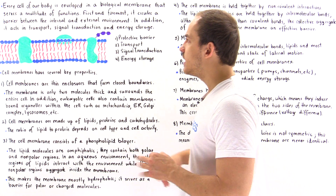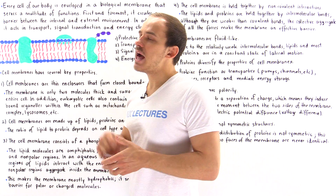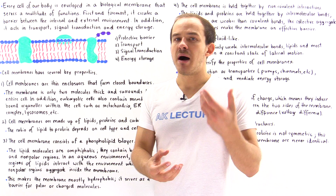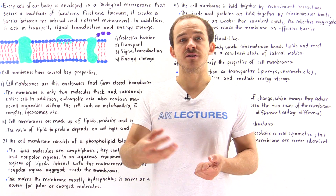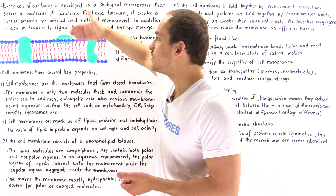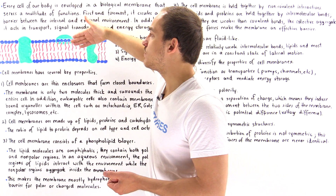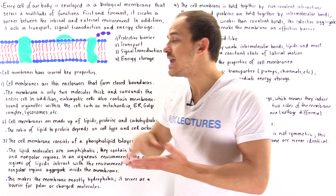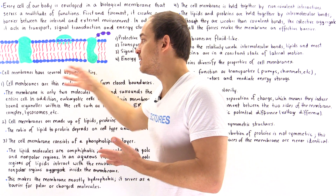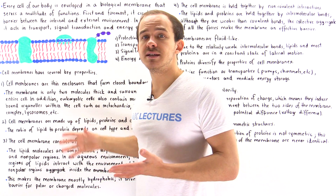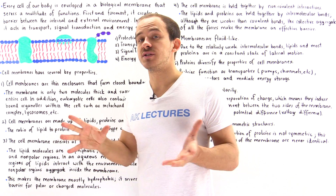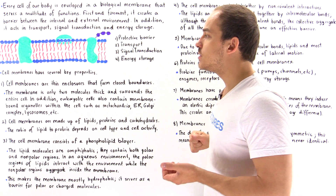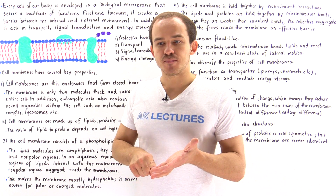Function number three is signal transduction. Certain molecules, for instance hormones, can interact with the outside portion of the cell membrane, and that will create many different types of signals and processes inside the cell, as we'll see in future lectures. And function number four is energy storage.